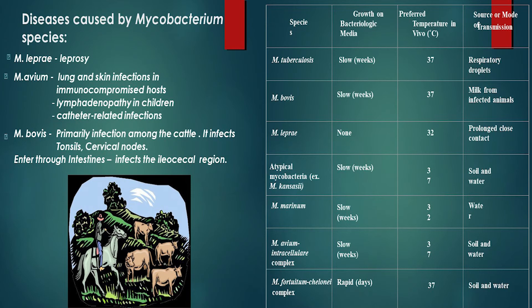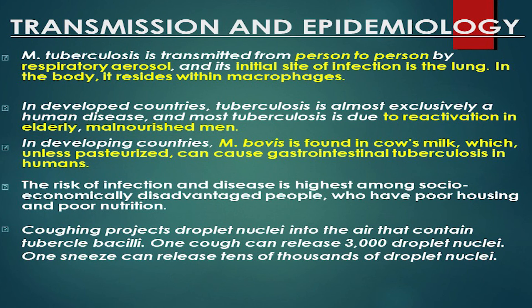The diseases caused by Mycobacterium species include leprosy, caused by Mycobacterium leprae. Mycobacterium bovis primarily causes tuberculosis of the GI tract, especially in the ileocecal region, and can also cause TB in the tonsils and cervical lymphadenitis.